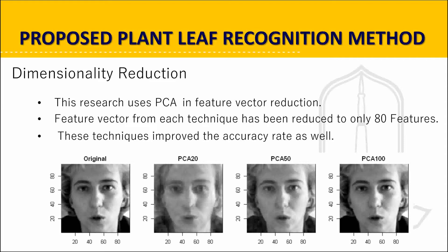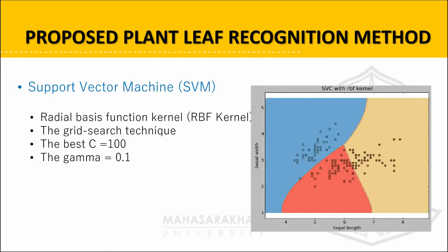The features will be fed to the dimensionality reduction method. This method used PCA in feature vector reduction. The feature vector from each technique has been reduced to only 80 features. These techniques improve the accuracy rate as well, then forward it to the classification process. This research used two types of classification algorithm, including support vector machine. The base C and gamma parameters of the SVM with the RBF kernel are 100 and 0.1 respectively.